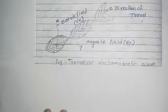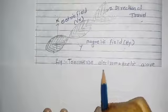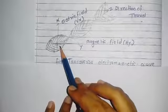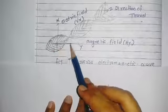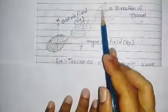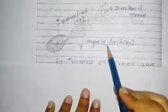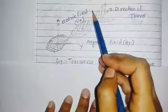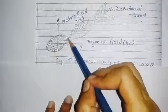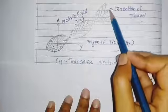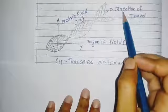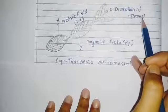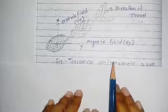This is the diagram of transverse electromagnetic waves. In this diagram we see that there are three axes: the y-axis represents the magnetic field, the x-axis represents the electric field, and the z-axis in the middle indicates the direction of travel.